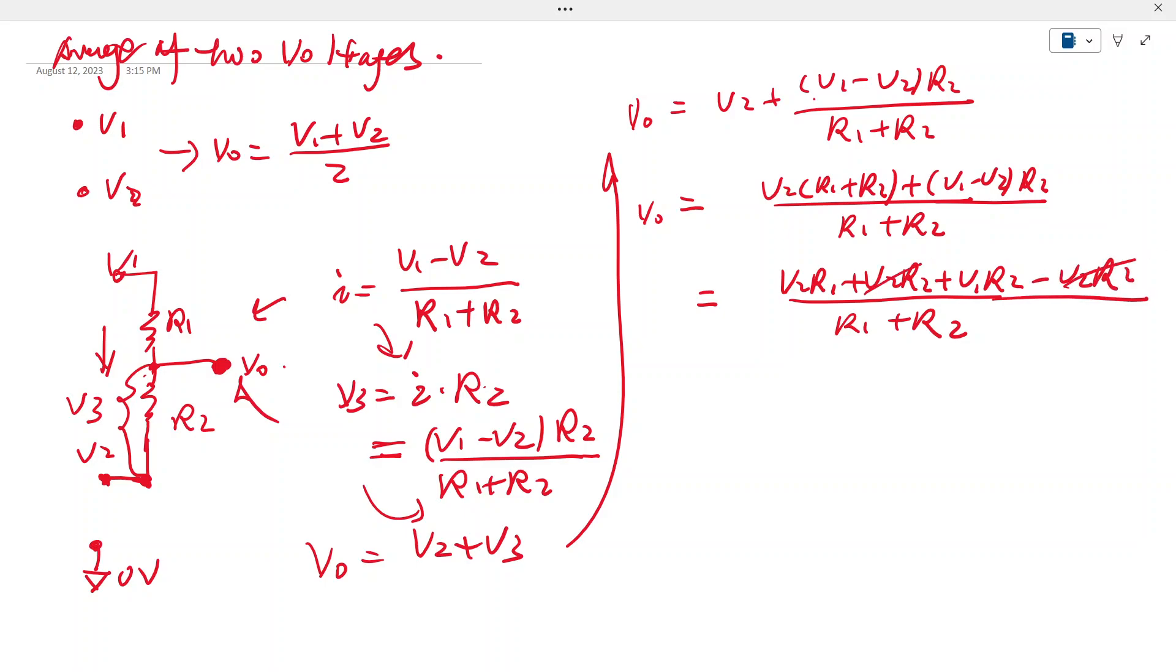So V2 R2 and V2 R2 cancel. What we have is Vout equals V2 R1 plus V1 R2 over R1 plus R2. If R1 equals R2, we call it R, what do we get?